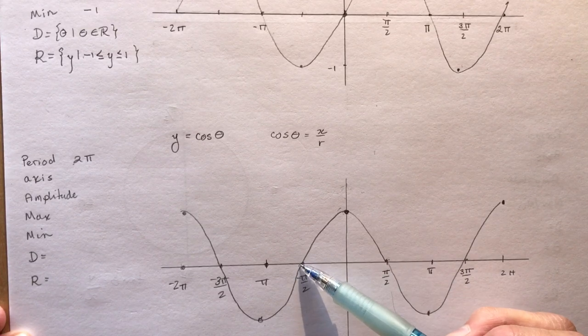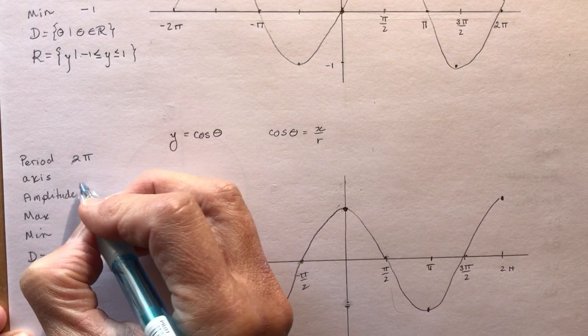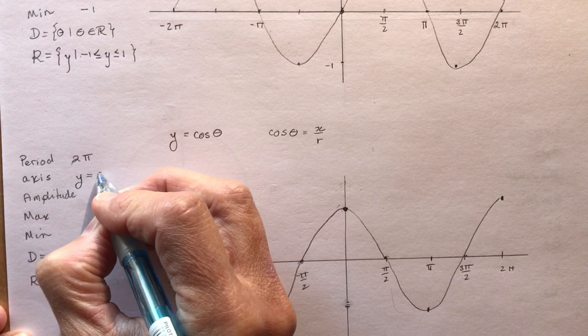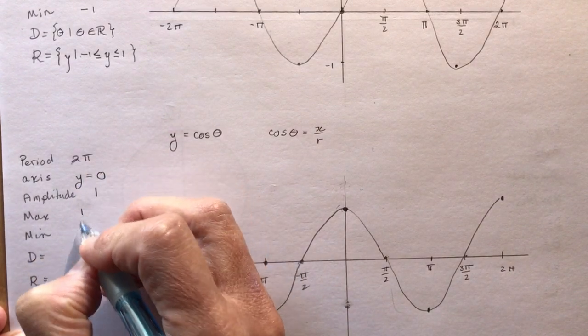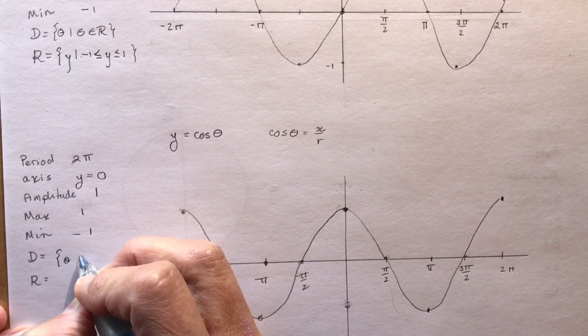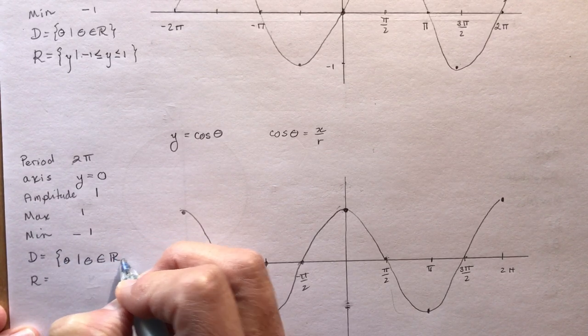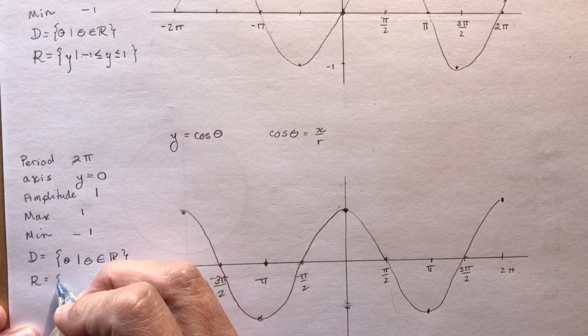The axis is the same as the sine function. The amplitude is the same. The max is the same. The min is the same. The domain is the same. Theta such that theta is an element of real numbers. And the range is exactly the same.